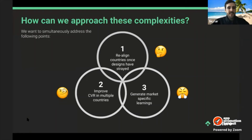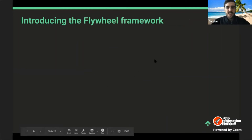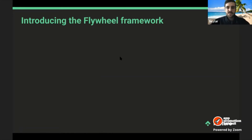We're faced with a dilemma: how to approach these complexities simultaneously. We want to: one, realign countries once their designs have strayed; two, improve conversion rates in multiple countries at the same time; three, generate market-specific learnings; and four, stick to an iterative approach along the way. This is a challenging task. We developed a way to adapt to this — something called the Flame Flywheel Framework.